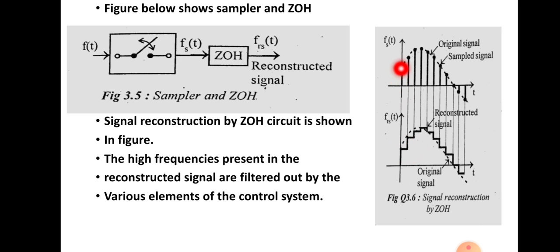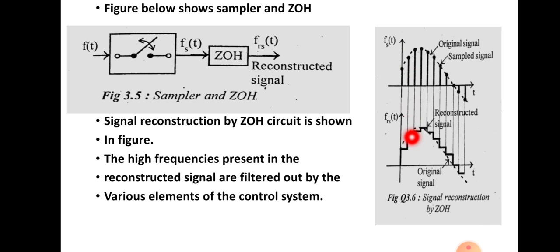Suppose if a sample is received, then this circuit will hold that value up to the sampling period, so that the value will be same up to this point. The signal will be like this. The next received sample will have a new value, and that value will be held up to the next interval, giving you a signal like this.